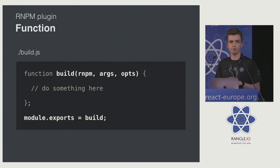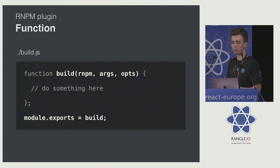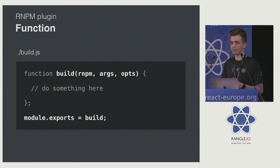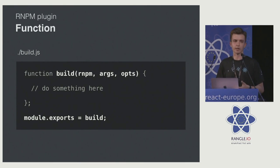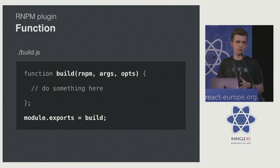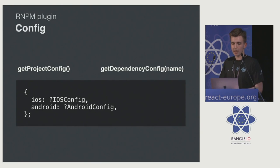The entry file defines some commands, and a command is a function. In this example, the build function receives three arguments. The first one is RMPM itself, which gives you some cool features we'll discuss shortly. There is the args argument, which is an array of extra arguments your command can receive — like a package name, as you often pass to link. And options, which is an object of all the options defined for your plugin, such as no-cache.